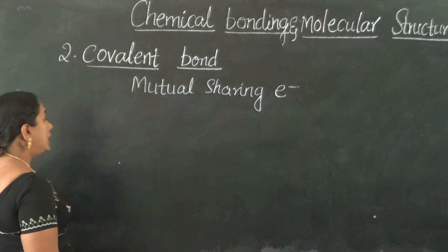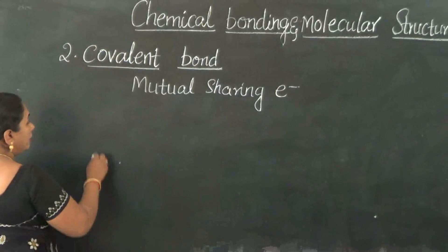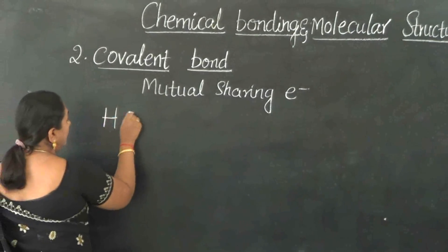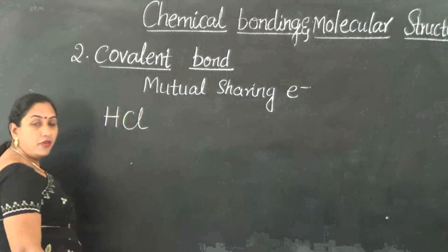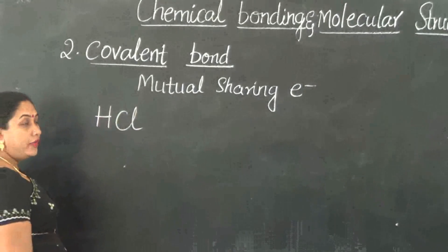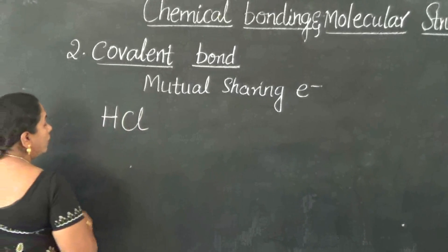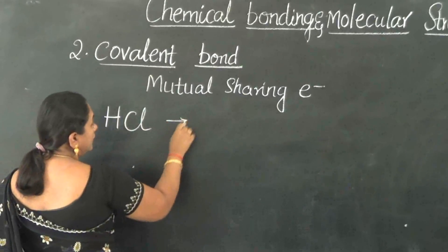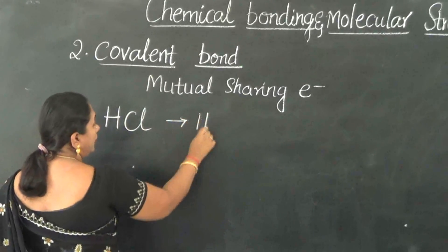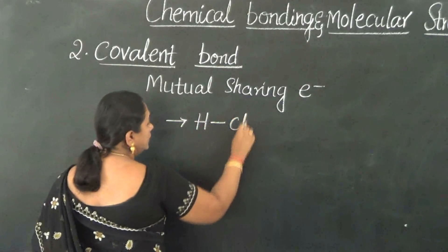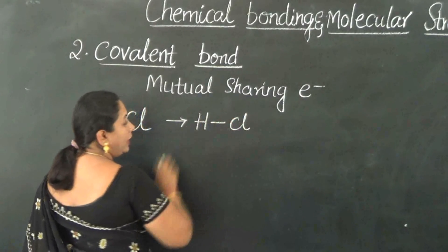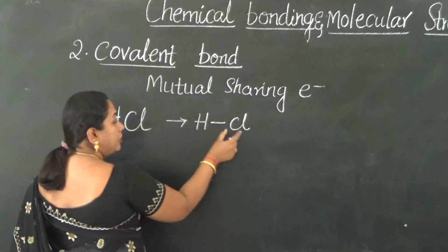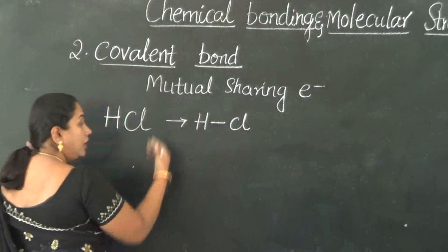Let us take up an example so the concepts become very clear. Let us take the example of formation of HCl — hydrogen chloride. This is formed by a single covalent bond between the atom of hydrogen and chlorine.